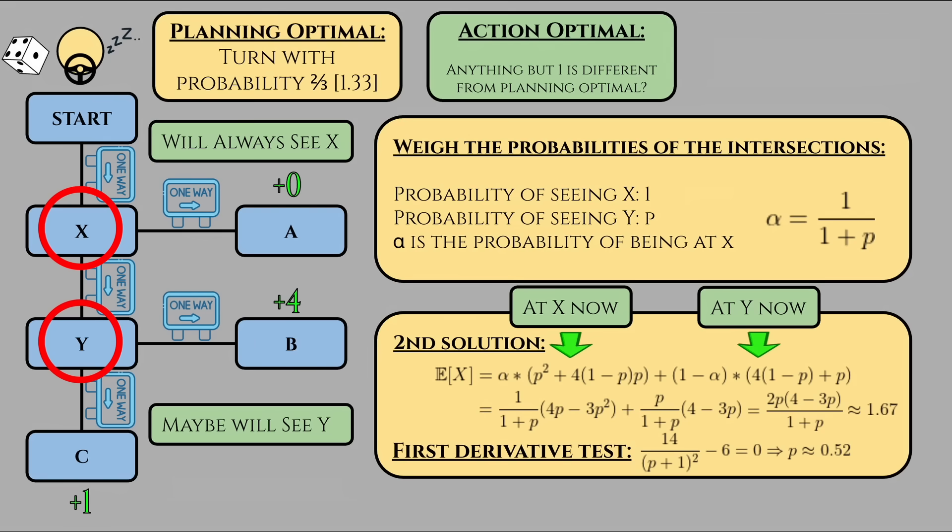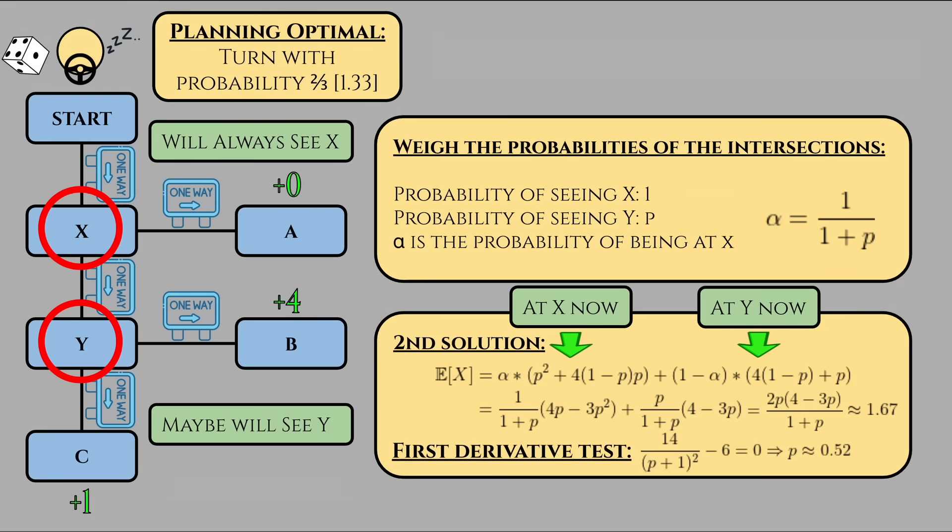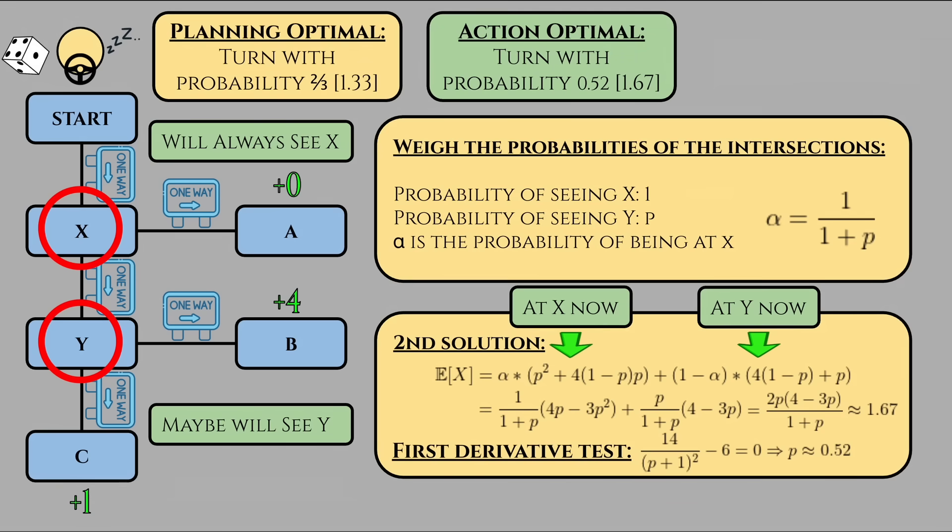But before we get too excited at this roughly 25% increase in expected value, we should take a step back. From our planning optimal representation of expected value, our expected utility before ever seeing any intersection should still be 4P minus 3P squared, meaning if we plug in around P equals 0.52, we get around 1.27 for our expected utility.